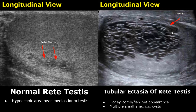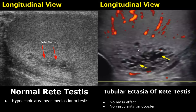In tubular ectasia of the rete testis, there are numerous small anechoic cysts which give a honeycomb or fishnet appearance. There is no internal flow seen with Doppler and there is no mass effect. These features differentiate it from testicular tumors and cancers.